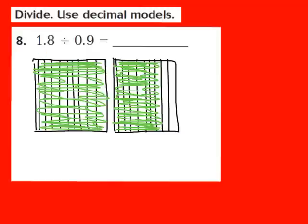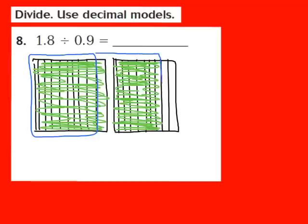In this case, our divisor is 9 tenths. I'm going to divide our models into equal groups of 9 tenths. Let's count: 1, 2, 3, 4, 5, 6, 7, 8, 9 tenths here — so there's one group of 9 tenths. Continuing on: 1, 2, 3, 4, 5, 6, 7, 8, 9 tenths here — so we now have a second group of 9 tenths.